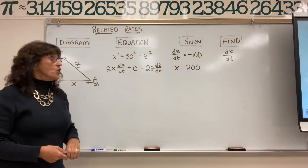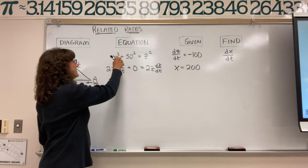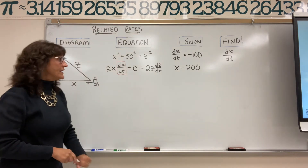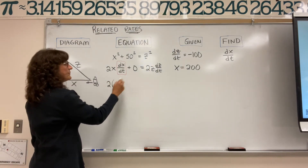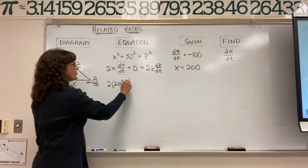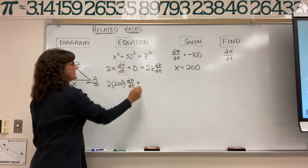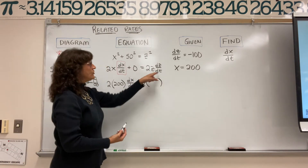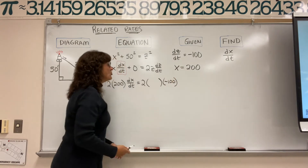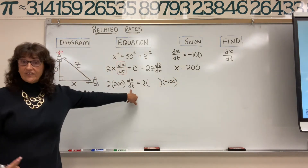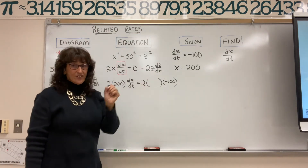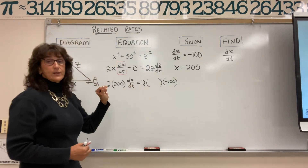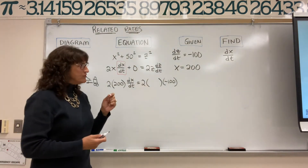Now we want to solve for dx/dt — the speed of the car. We need to plug in values for all the rest. We have 2 times x equals 200, so 2(200) times dx/dt on the left side. On the right side, we have 2 times z times negative 100. But we don't know what z is, so we're going to have to figure out z. A lot of times with these right-triangle problems they don't give you all the values you need — you have to go figure some of them out yourself.